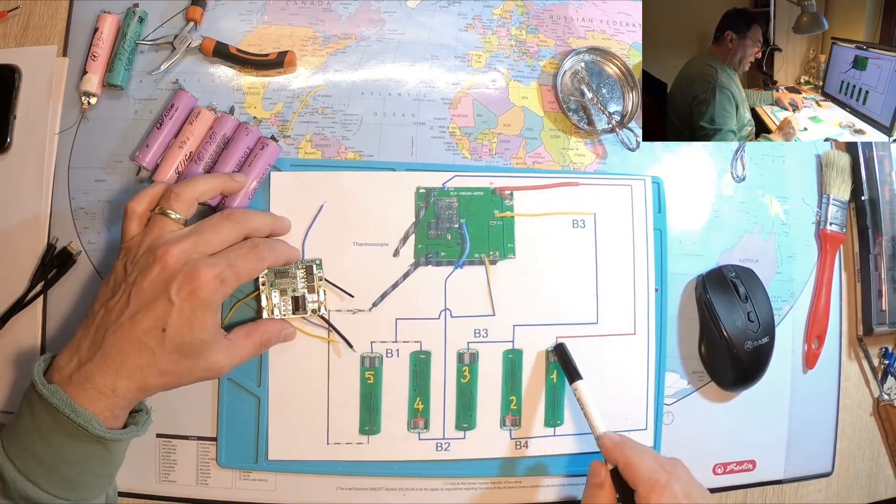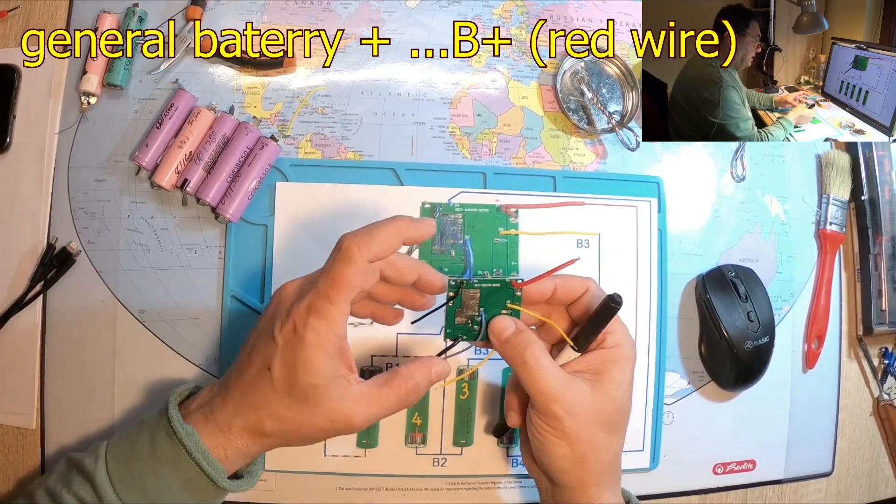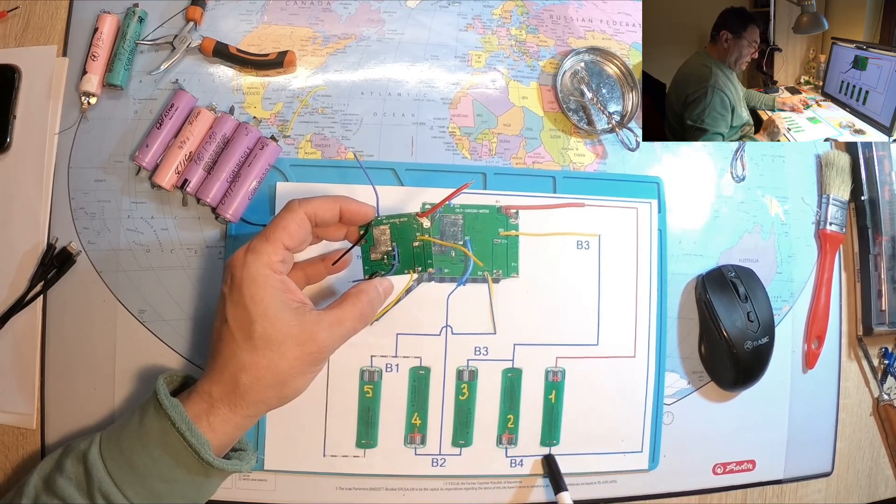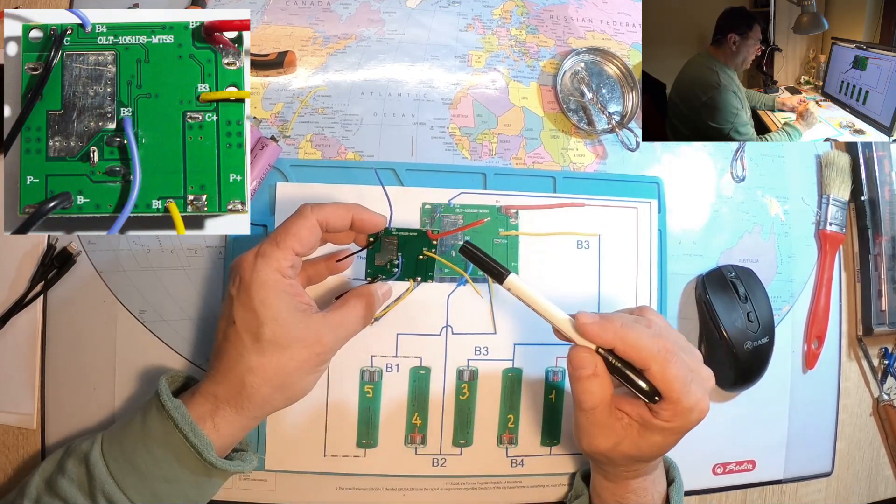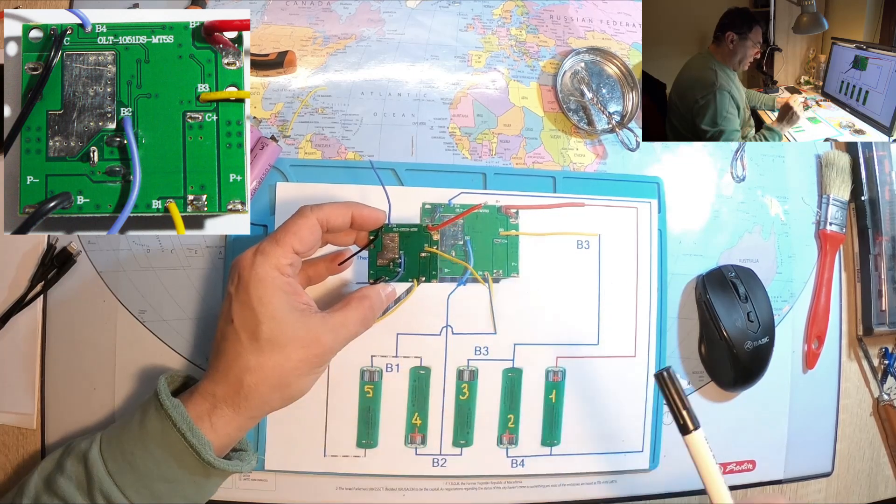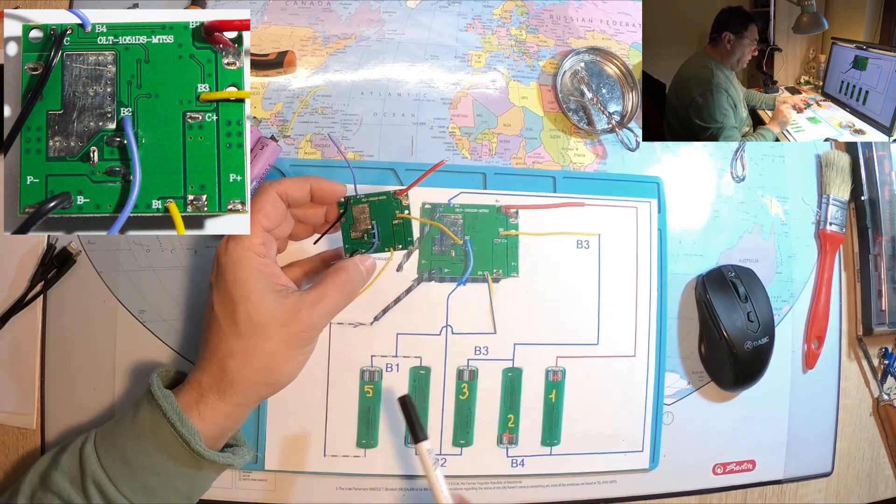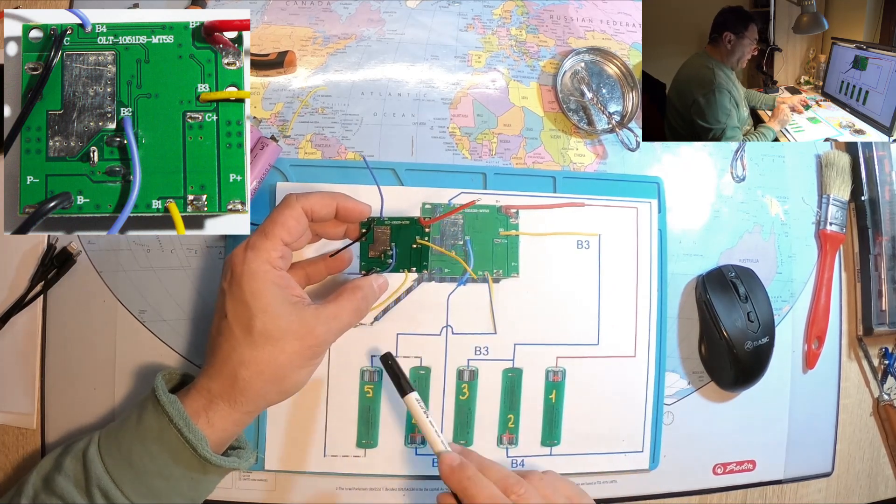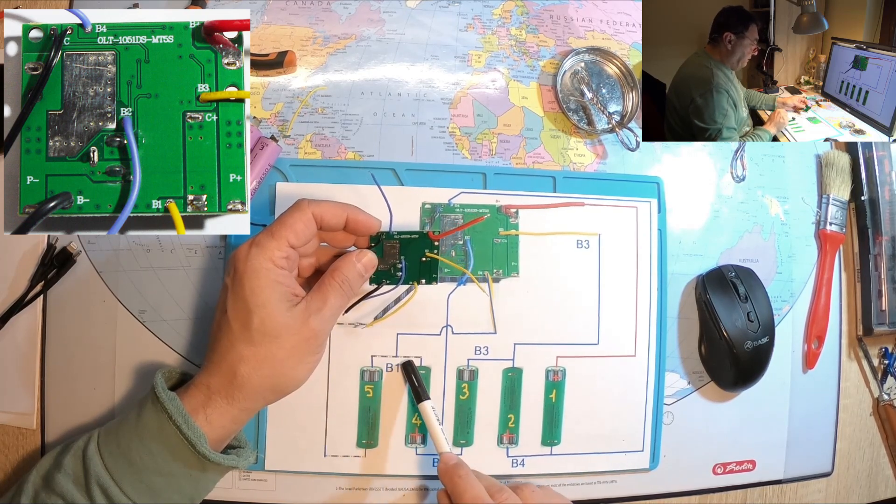The plus is going here on B+, which is this guy here. Then on the first row of cells, these are in series all of them, we have the B4 connection, battery 4, right here. Then B3 is coming in the middle, and B2 right there. And near the minus we have the B1.